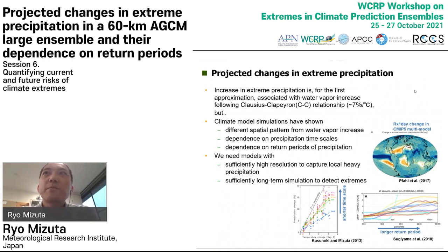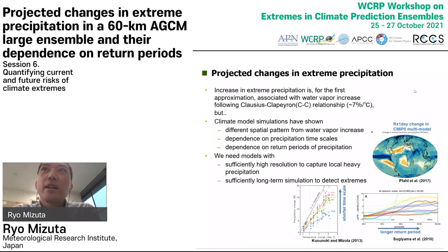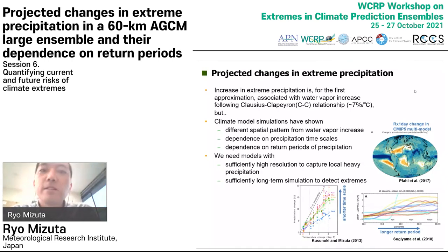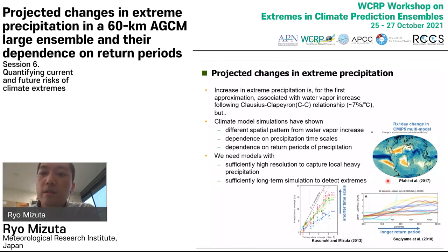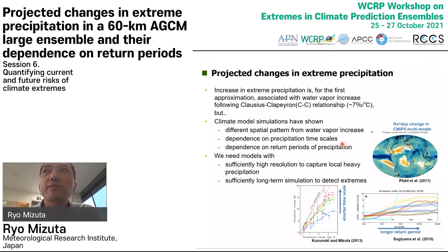Extreme precipitation is projected to increase in most parts of the world due to global warming, and it is for the first approximation associated with water vapor increase in the atmosphere. Saturated water vapor increases about 7% per Kelvin based on the Clausius-Clapeyron relationship. But climate model simulations have shown that the spatial pattern of extreme precipitation is different from that of water vapor increase.